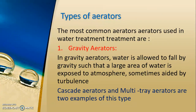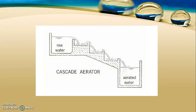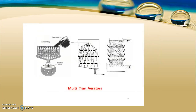There are different types of aerators used in water treatment plants. The most common are gravity aerators, where water falls by gravity so that a large area is exposed to the atmosphere, sometimes aided by turbulence. Gravity aerators include cascade aerators and multi-tray aerators. In a cascade aerator, steps are provided and water falls through them by gravity, exposing it to the atmosphere. In a multi-tray aerator, water is made to fall through a series of trays.